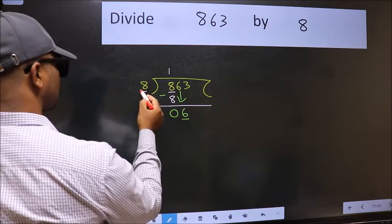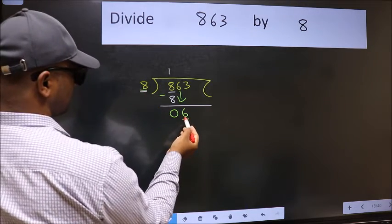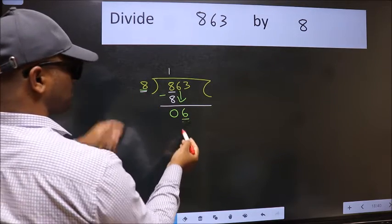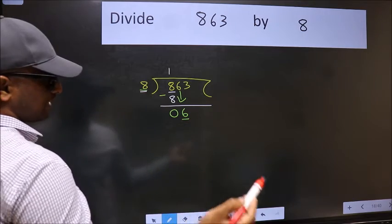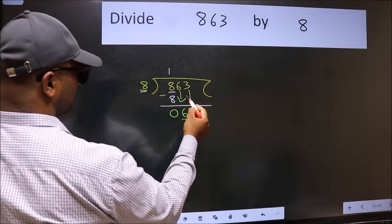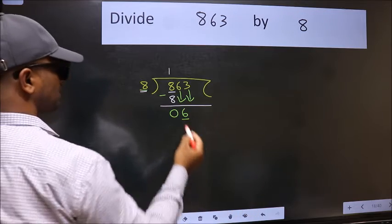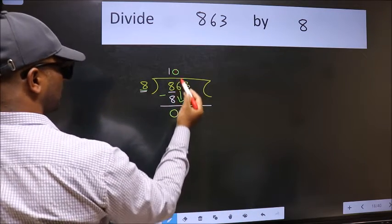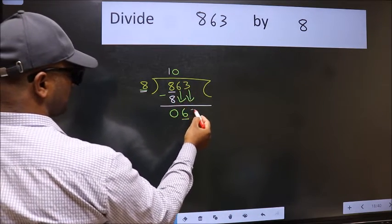Now here we have 6 and here 8. 6 is smaller than 8, so we should bring down the second number. And the rule to bring down second number is we should put 0 here. Then only we can bring this number down.